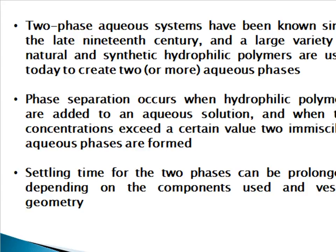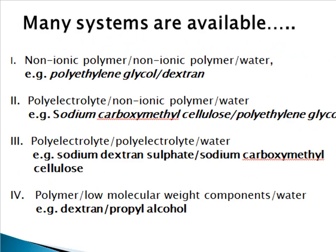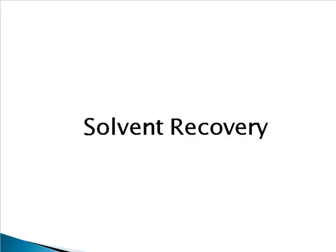Settling time for the two phases can be prolonged depending on the components used and vessel geometry. Systems used today include: first, non-ionic polymer–water systems such as polyethylene glycol and dextran; second, polyelectrolyte–non-ionic polymer–water systems such as sodium carboxymethyl cellulose and polyethylene glycol; third, polyelectrolyte–polyelectrolyte–water systems such as sodium dextran sulfate or sodium carboxymethyl cellulose; and fourth, polymer–low-molecular-weight-component–water systems such as dextran–propyl alcohol.